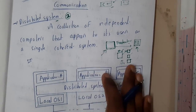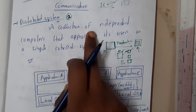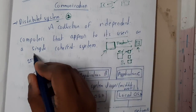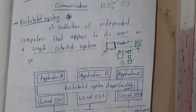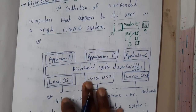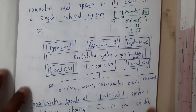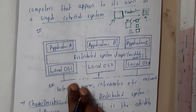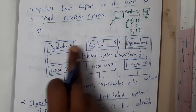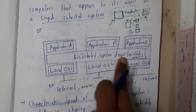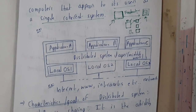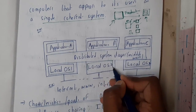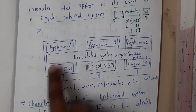So a distributed system is a collection of independent computers that appear to its users as a single coherent system. Whenever you search this topic on the internet, you'll see a diagram showing multiple applications with a distributed middleware layer — the distributed system OS or middleware is the same for all nodes, while the local OS can be different — all connected through a network.